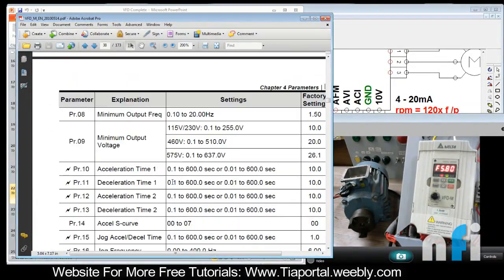So parameter 10 says acceleration time 1, deacceleration time 1, so let's have some values here. By default it's 10 volts, so let's see how motor will respond if I turn on the motor, how the speed will be increased.